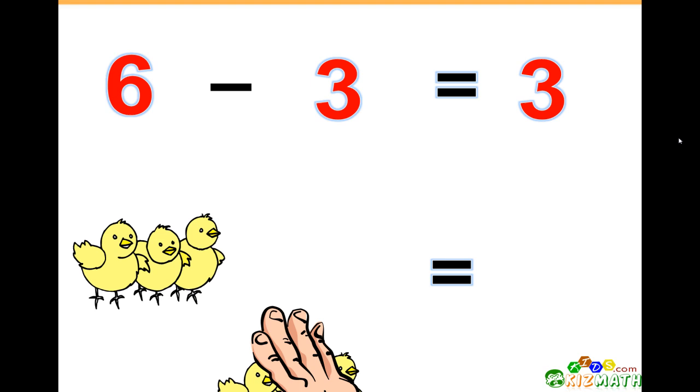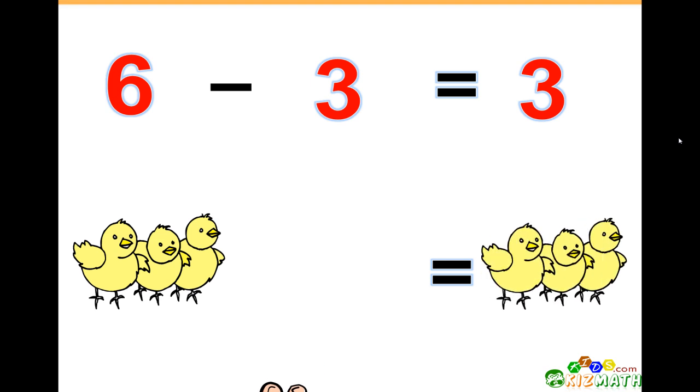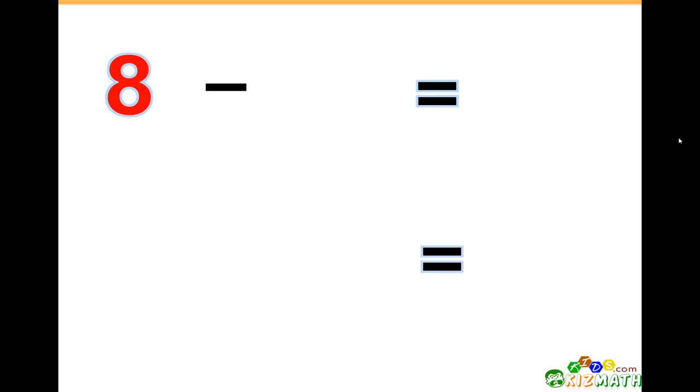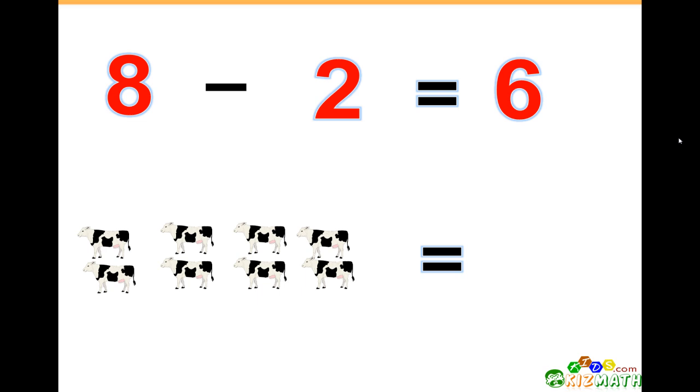away three of those birds, there are only three birds left. 8 minus 2 equals 6. If we have eight cows and we take away two cows,